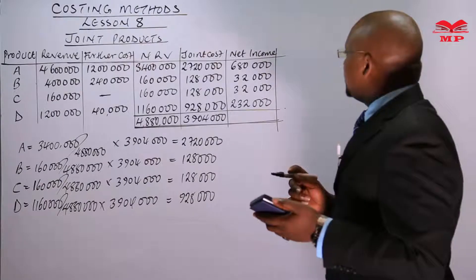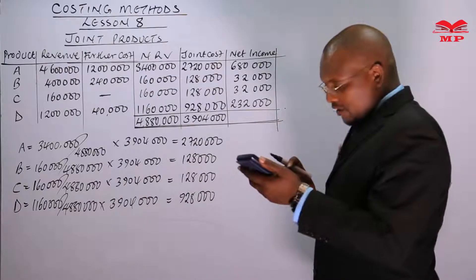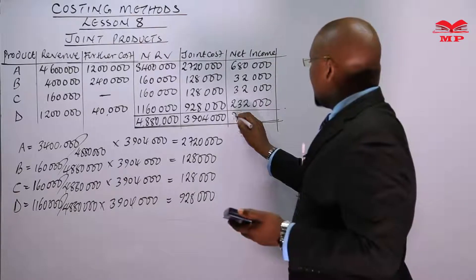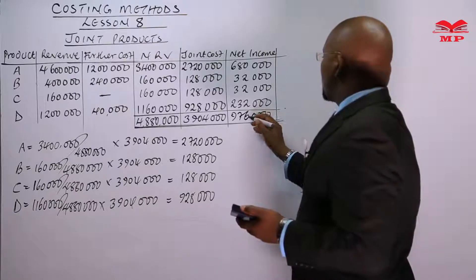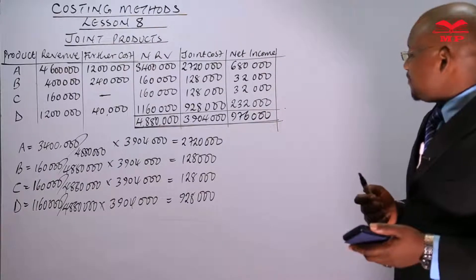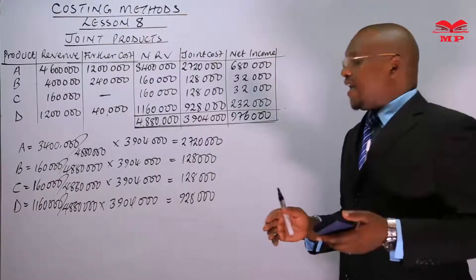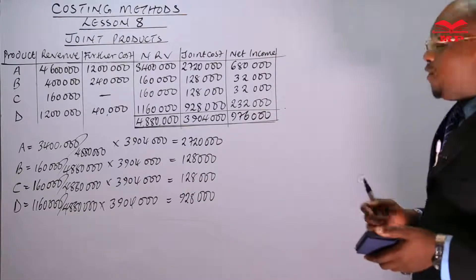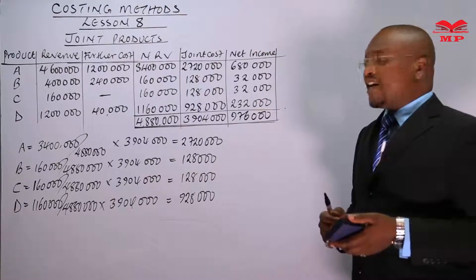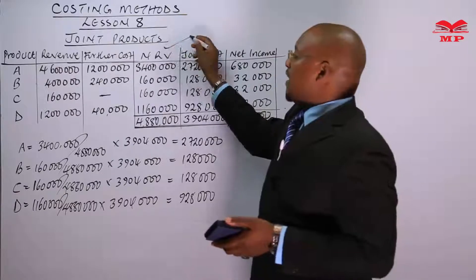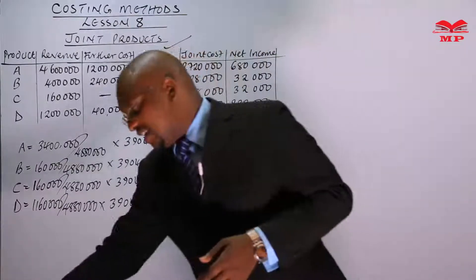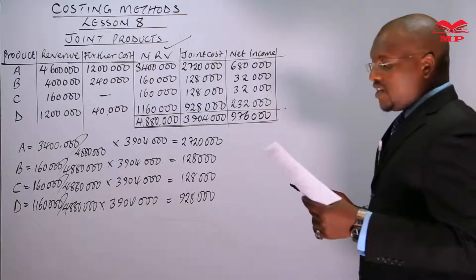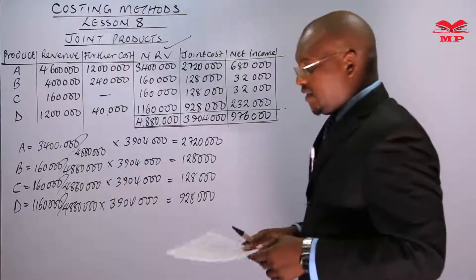The total net income is 32,000 plus 32,000 plus 680,000 plus 232,000, giving 976,000. We can also prove this by taking total NRV of 4,880,000 and subtracting the joint cost of 3,904,000. That is all about the NRV method. The part B of this question asks us to use the alternative method at the split-off, meaning we use the sale value method.